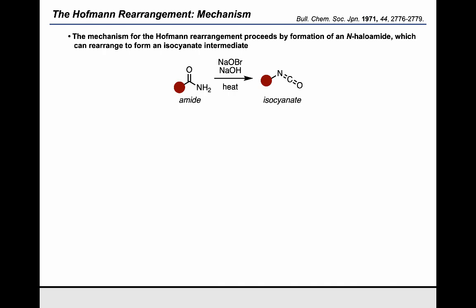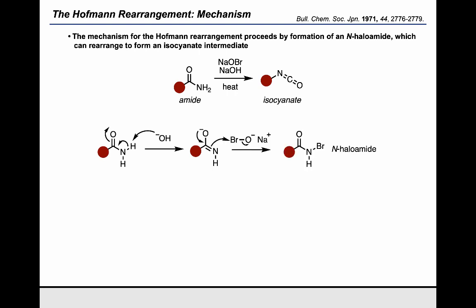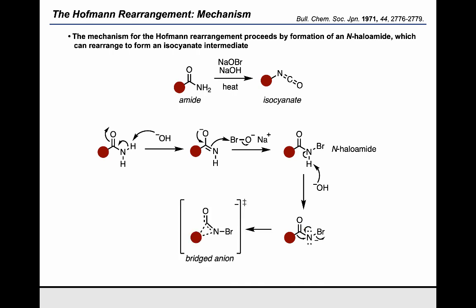The mechanism of the Hoffman rearrangement requires the formation of an N-halo amide, which can then rearrange into the isocyanate. To start the mechanism, we'll redraw the amide and show how treating it with a base allows us to deprotonate the amide to form an oxyanionic intermediate. That intermediate can then interact with an electrophilic bromine source to form the N-halo amide. At that point, we can deprotonate once more to form a deprotonated nitrogen species, which can then rearrange by a bridged anionic transition state to form the isocyanate product.